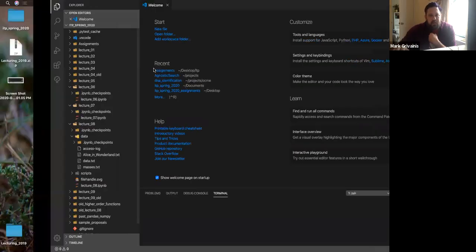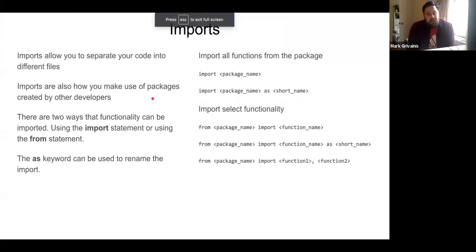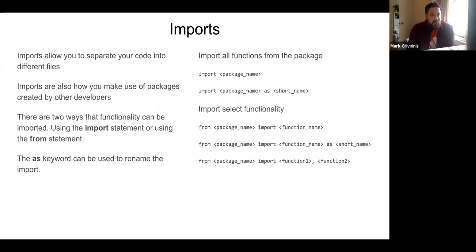For today we're going to discuss imports, modules, and command line arguments. Imports are used fairly commonly — most scripts will have at least one import. What imports do is they allow you to split your code into different files, which is very useful. Another use is when you're using packages created by other people. Some examples we've done so far: importing pprint, importing defaultdict — all of these are imports, importing functionality from a different file into our current file.